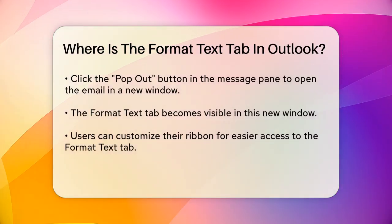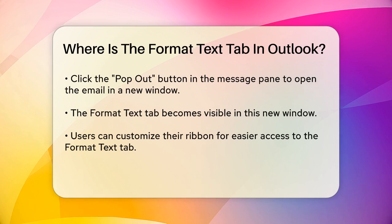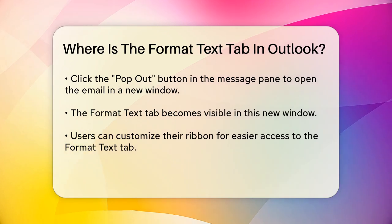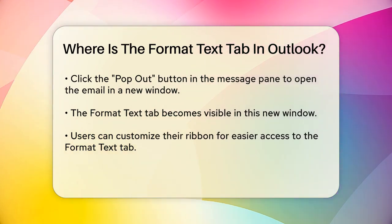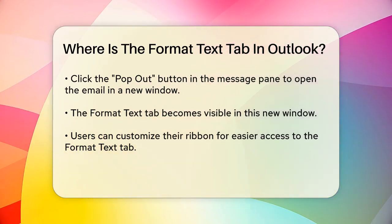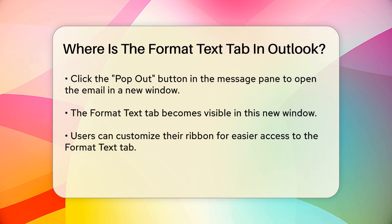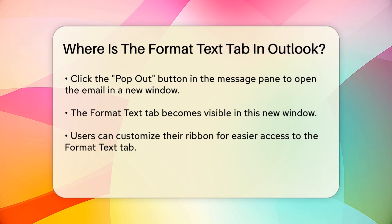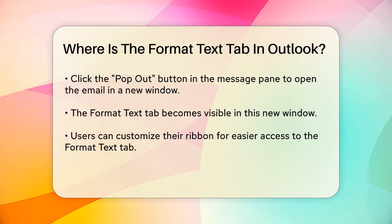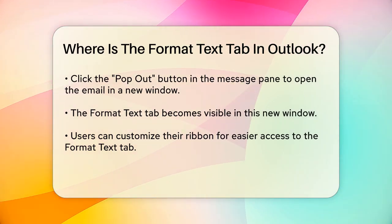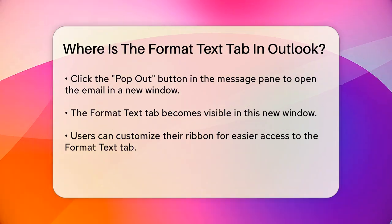To access the Format Text tab, you need to pop out the message you're editing. Here's how you do it: when you're in the message pane, click on the Pop Out button. This will open your email in a new window where you can see the Format Text tab.